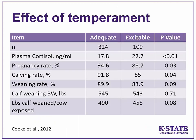Rinaldo Cook, a graduate student in Florida, did temperament studies with Brahman-influenced cattle, then repeated them in Hereford-Angus cows in Oregon. Cattle were scored using an exit score — did they dash out of the chute or walk calmly — and a chute score for behavior while restrained. Calmer animals had significantly lower cortisol, and those with adequate temperament had a higher pregnancy rate. Overall, they estimated about a $60 per calf advantage in adequate-temperament cows.